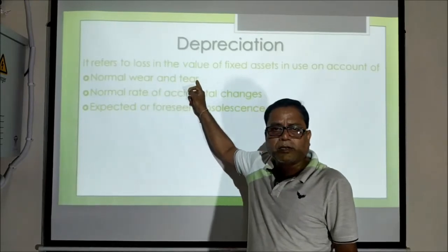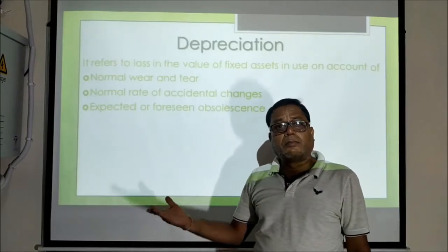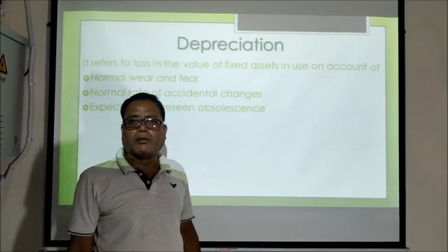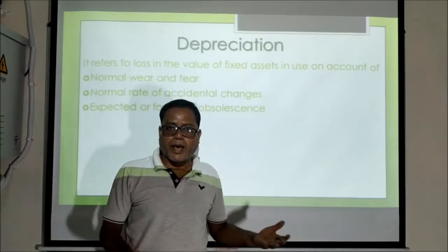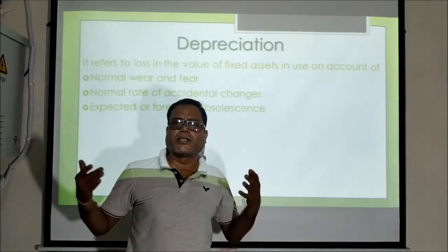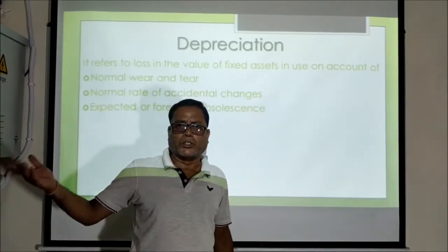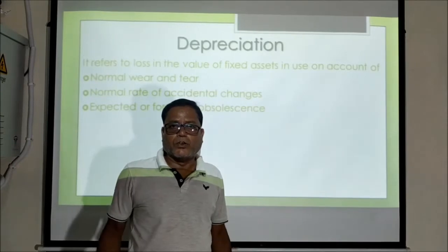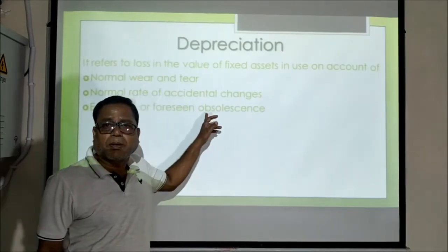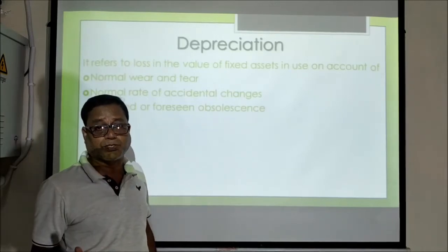For example, normal wear and tear is a very well expected reason. But there are situations where the value of capital goods falls unexpectedly — such as a fire accident, theft, or mob damage. We cannot predict when a fire accident will occur or when a thief will cause damage. Mob damage is another example where people become angry and damage property. Such cases represent unexpected obsolescence, and we simply cannot calculate this type of obsolescence in advance.